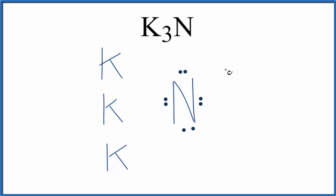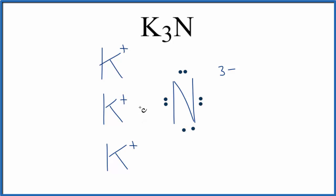Since nitrogen got three electrons, it'll be three minus. Each potassium lost an electron — lost a negative charge — so each potassium is one plus. We should put brackets around the nitrogen here to show that the electrons were transferred from the metal to the non-metal.